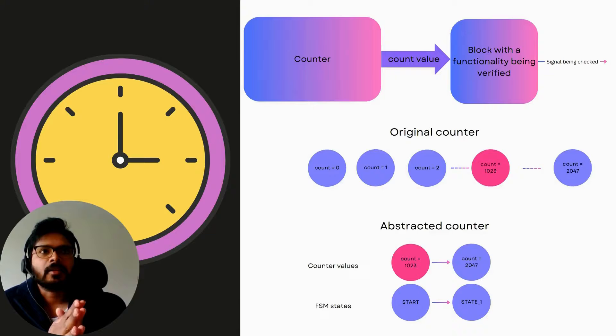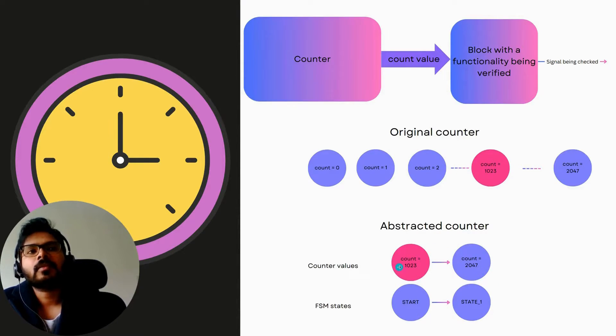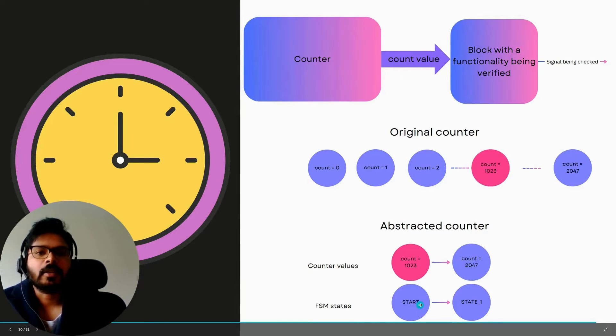So how will the abstraction affect the counter values? Initially, when you did not have any abstraction, you were forced to wait for the counter to reach from zero all the way to 1023 for a check to trigger. And then you will be checking whether a particular property that you're verifying is passing or failing. But with the abstraction, we have the value jumping directly from 1023 to 2047. That's it. And these are the FSM states corresponding to these values that we discussed.